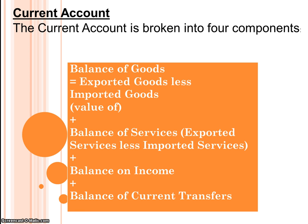The current account measures New Zealand's short-term transactions with the rest of the world. It's made up of four parts: the balance of goods, which is the value of our exports minus the value of our imports in terms of goods; the balance of services — services we provide that are paid for minus what we pay for as New Zealanders; plus the balance on income and the balance on current transfers.